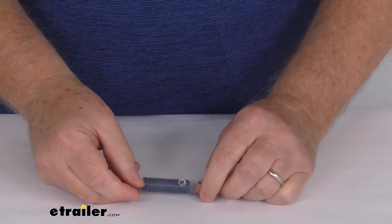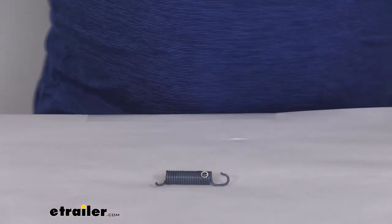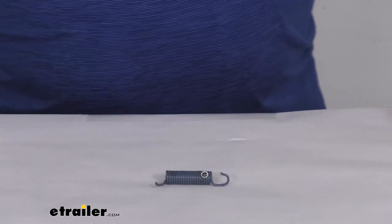That should do it for the review of the replacement primary shoe retractor spring for the Dexter 12-inch by 2-inch free backing hydraulic brakes.